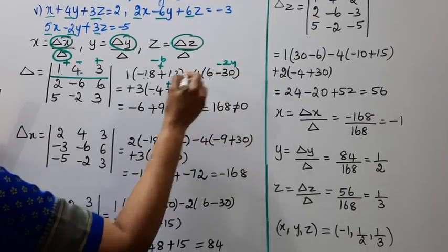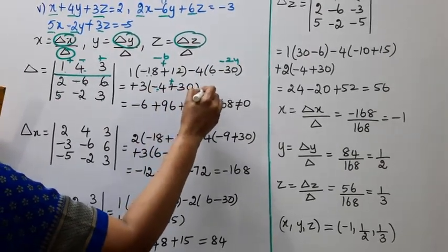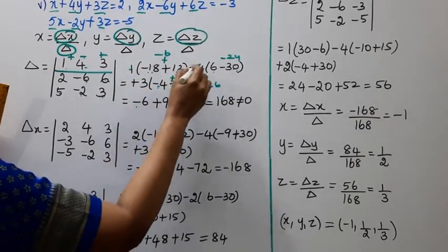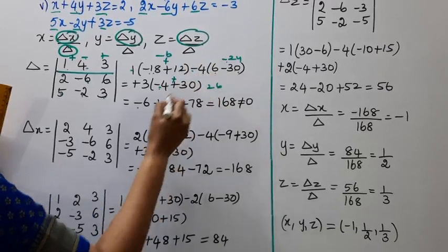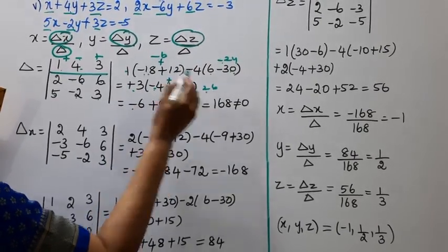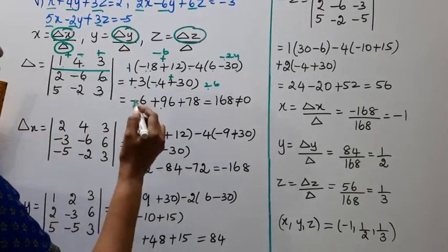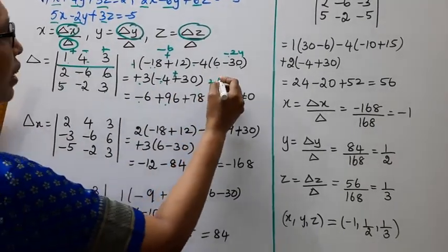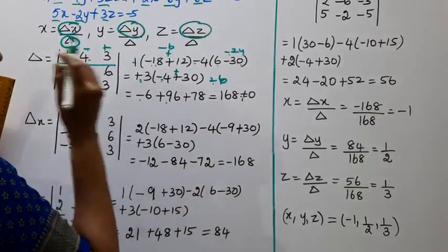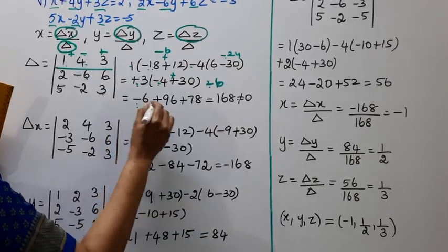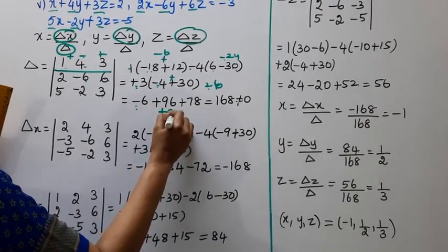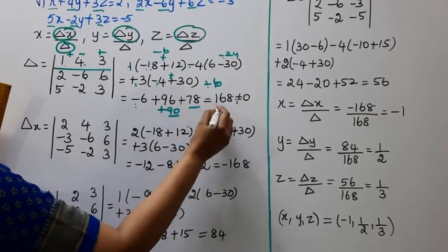Continuing the delta calculation: 1 into minus 6 is minus 6; minus 4 into minus 24 gives plus 96; plus 3 into plus 26 gives 78. So delta equals minus 6 plus 96 plus 78, which gives 90 plus 78 equals 168.